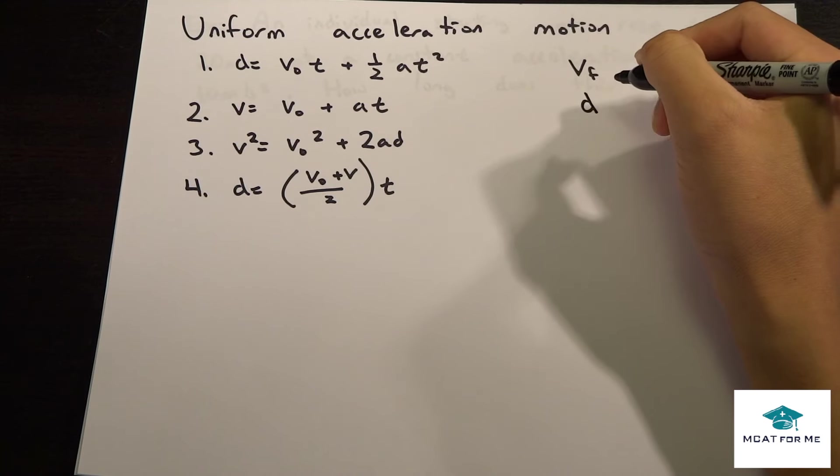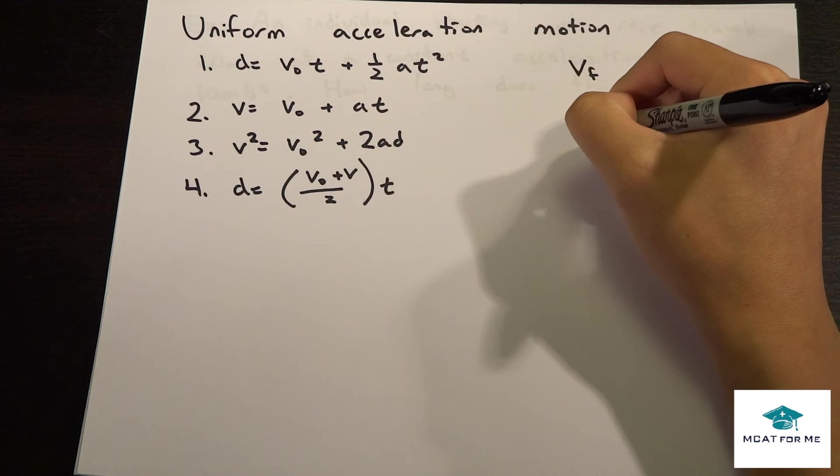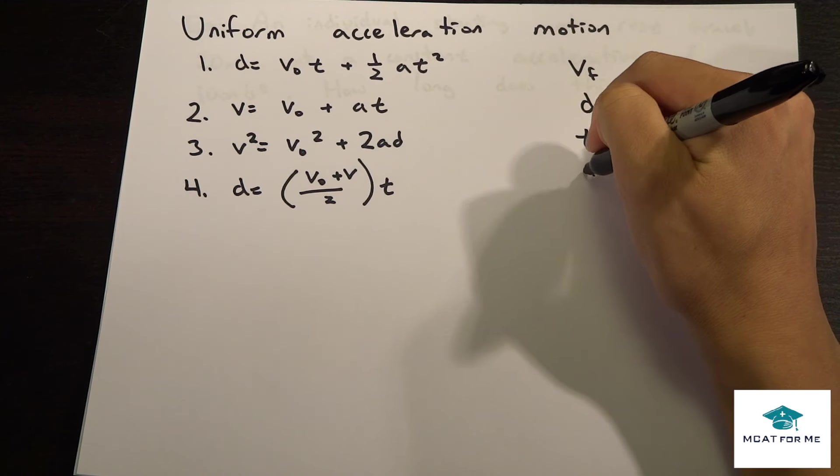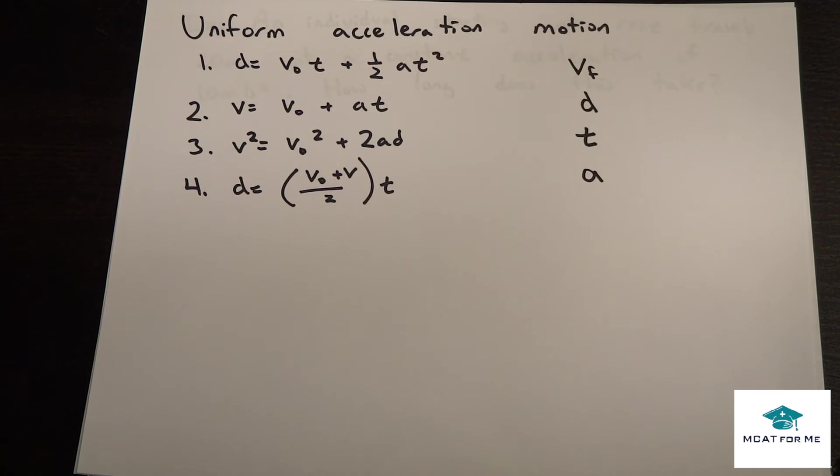In this one, we aren't given d, in this one we aren't given t, and in this one we aren't given a. So it has all four of our variables covered.